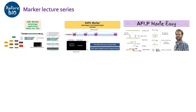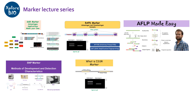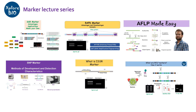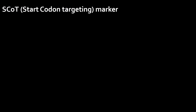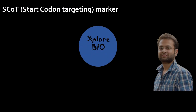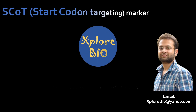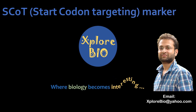Hello and welcome to a new video on the marker series of ExploreBio. Previously, I have uploaded several videos on different marker types such as SSRs, RAPD, AFLP, SNP, ISSR and others, and I have explained how they work. If you are interested to know more about them, you may check out the links given in the description below. Today, you will learn about a new type of marker called SCoT, or Start Codon Targeted marker, which is becoming very popular these days.